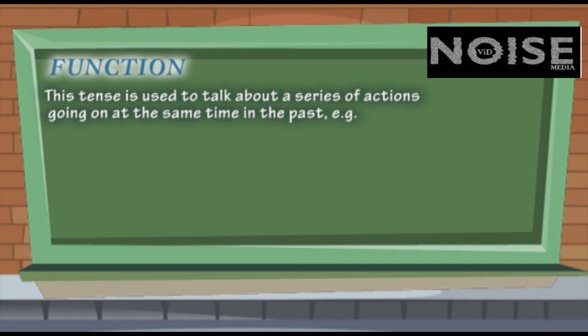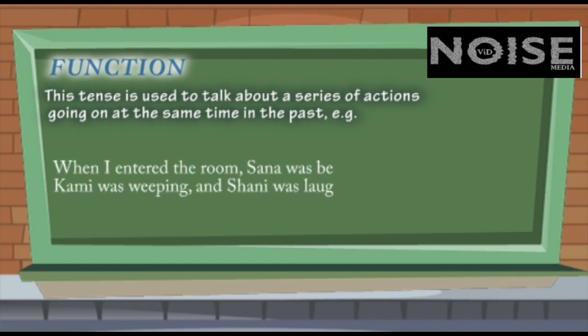This tense is used to talk about a series of actions going on at the same time in the past. For example, When I entered the room, Sana was beating Kami, Kami was weeping and Shani was laughing at Kami.